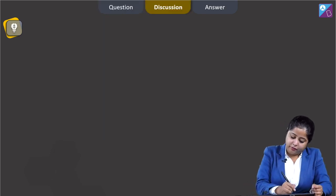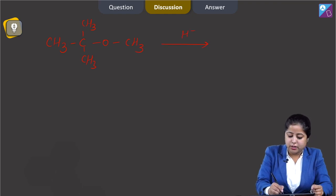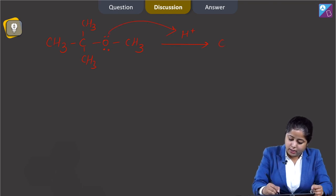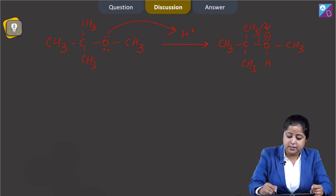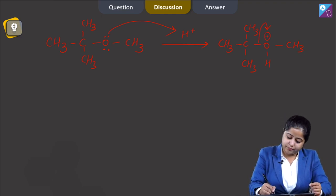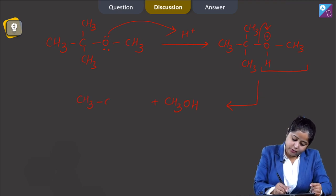Let us write the reaction. We are given tert-butyl methyl ether. First, this reacts with H⁺ - the lone pair of oxygen bonds with H⁺ and protonation occurs, giving a protonated ether. This bond then shifts towards oxygen, and as a result a 3° carbocation is formed, along with CH3OH (methanol).